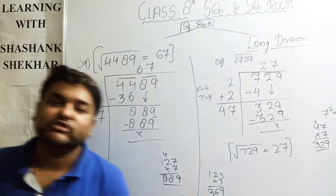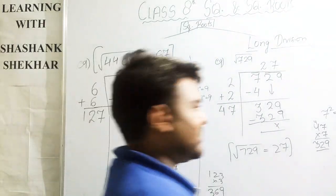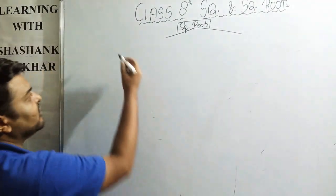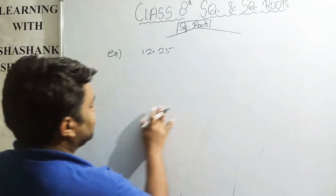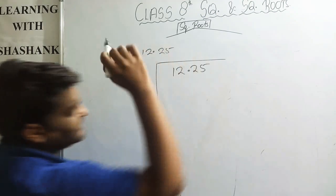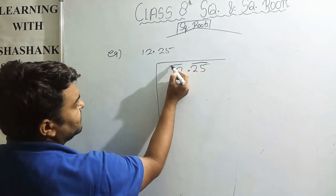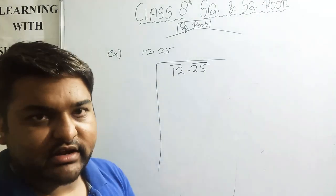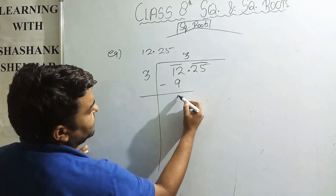Next, I will take an example of finding the square root of a decimal number. The example is 12.25. First, I will write 12.25 and make pairs from the right: the first pair is 25 and the second pair is 12. Looking at the first group, 12: since 3² = 9 and 4² = 16, we use 3. Subtracting 12 − 9 gives 3.